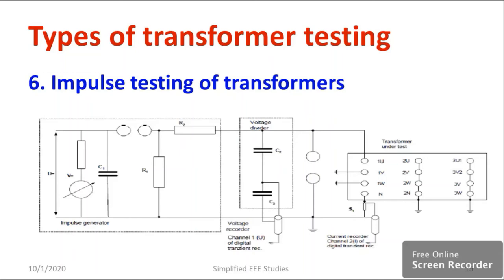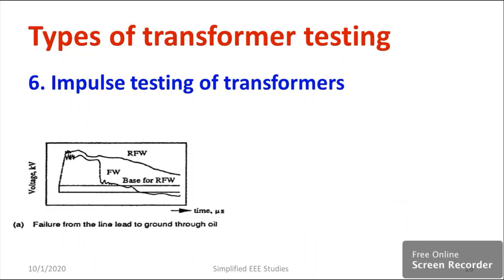You will check the characteristics of the output voltage — whether any serious changes are happening — and make a conclusion. Similarly, you will test all other windings following the same procedure. Based on the different waveforms, you will come to know whether the insulation has certain problems. If you observe these kinds of waveforms, we will know that this is a failure from the line lead to ground through the transformer oil.